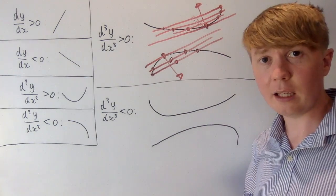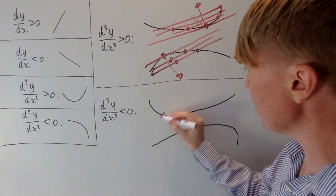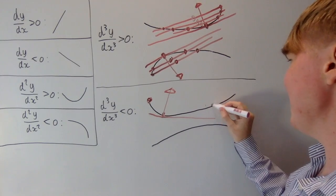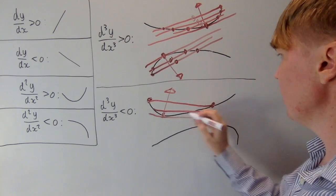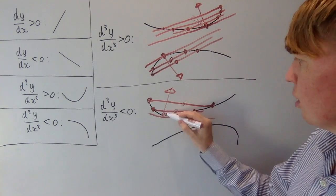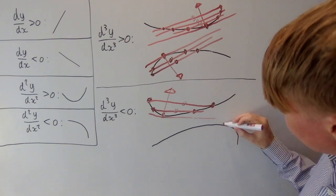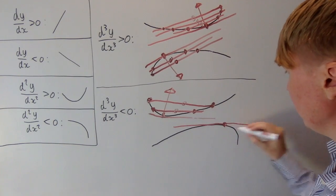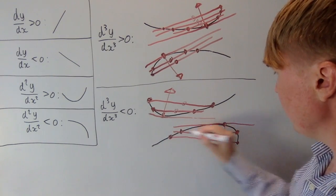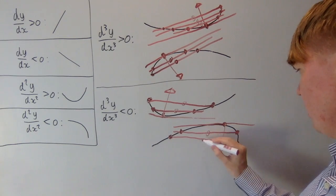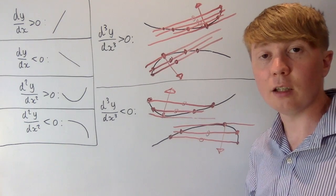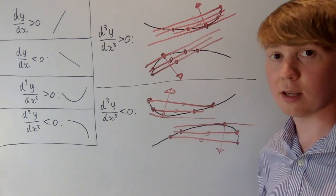When the third derivative is positive, the midpoints of the chords are anti-clockwise of the inward-facing normal. When the third derivative is negative, the midpoints are clockwise of the normal. Drawing chords parallel to the tangent in the negative third derivative case, you can see the function is stretched out in the other direction, so the midpoints are over on the right — clockwise from the normal.